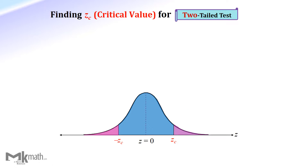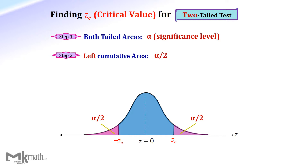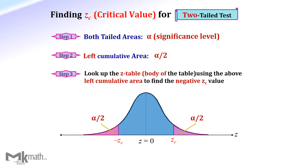Lastly, finding z-critical values for a two-tailed test. Step 1: since this is a two-tailed test, the sum of the two-tailed areas is given as the significance level alpha. Step 2: because we use the left cumulative z-table, the left cumulative area is half of the two-tailed areas. Step 3: find the corresponding z-score using that left cumulative area, half alpha.